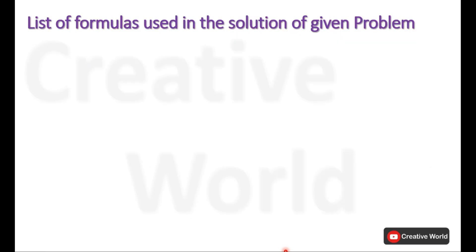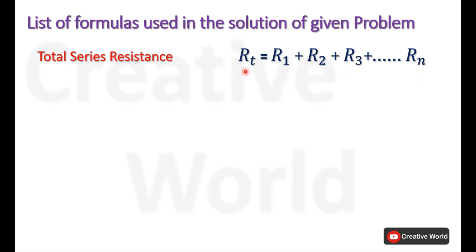While solving this problem, we will be using the equivalent resistance calculation formula for a series network. That is RT equal to R1 plus R2 plus R3 and so on up to Rn. RT is the total resistance of the series network, and R1, R2, R3 up to Rn are the number of resistances connected in that series network.